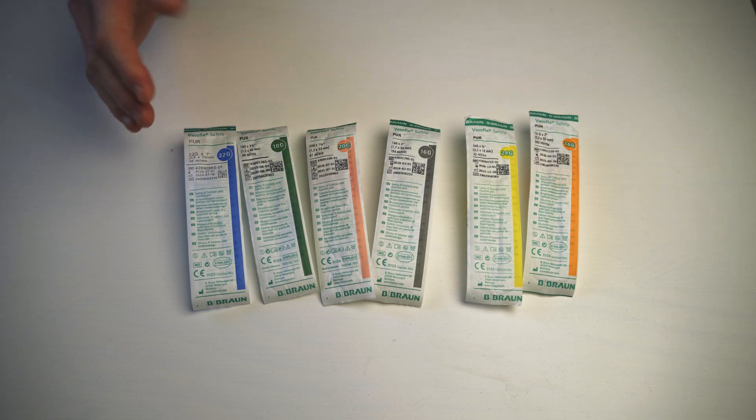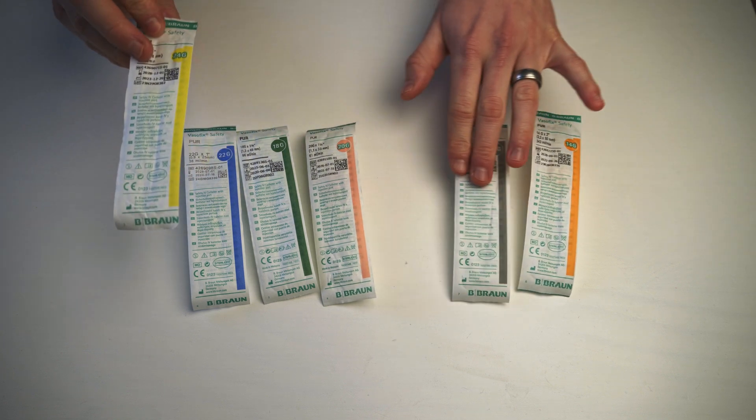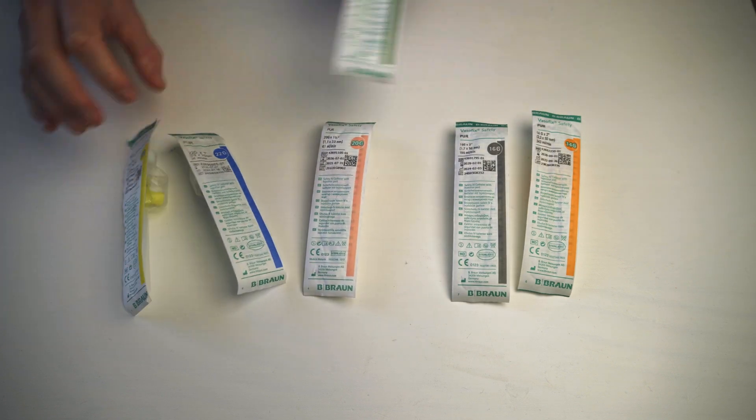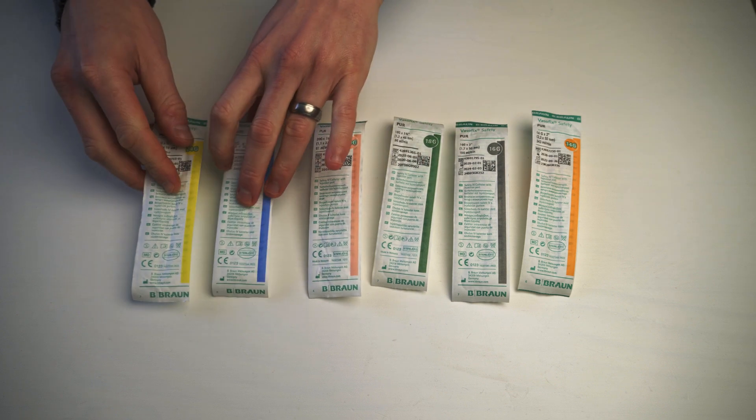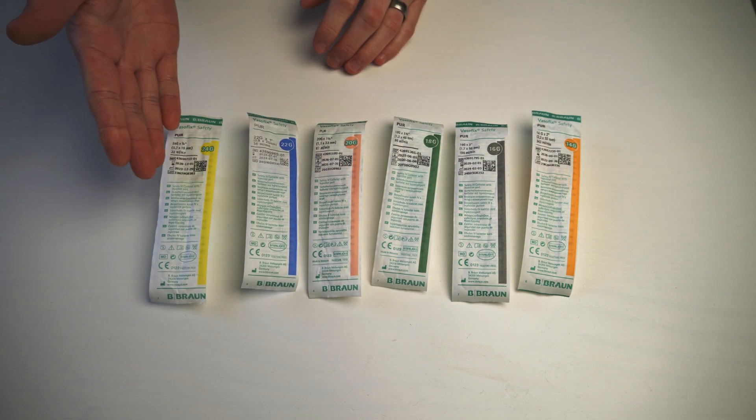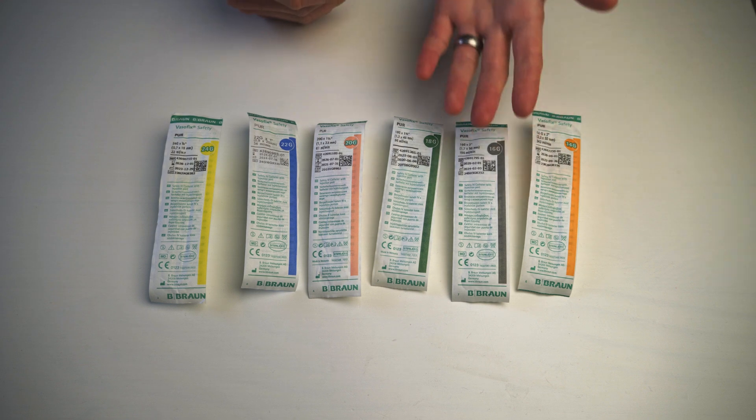So a baby or a child would get very small ones, and I can see these aren't even in line probably. So a child or a baby would get a very small one and an adult would get a bigger one.